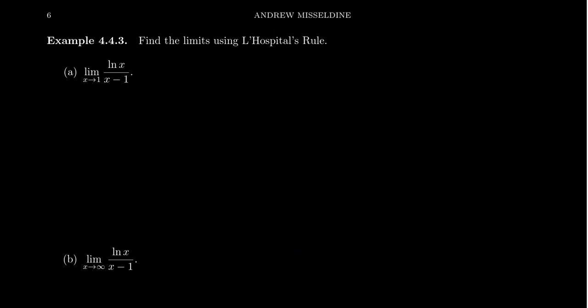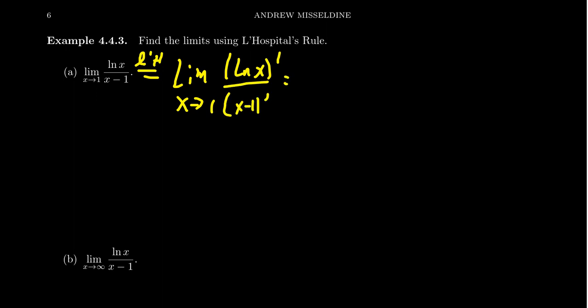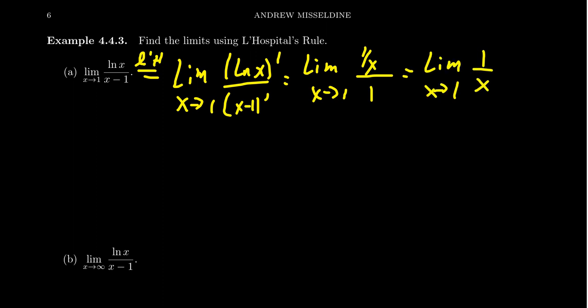Let's consider the limit as x approaches 1 of the natural log of x over x minus 1. We get the natural log of 1 over 1 minus 1, which gives 0 over 0 — an indeterminate form, so we apply L'Hôpital's rule. I'll put LH on top to indicate these limits are equal by L'Hôpital. We take the derivative of the natural log, which is 1 over x, over the derivative of x minus 1, which is 1. We get 1 over x, and plugging in x equals 1 gives 1 over 1, so the limit equals 1.